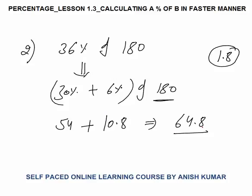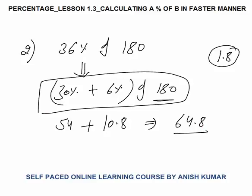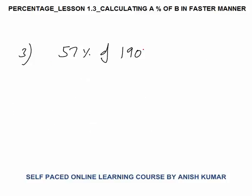In this way you have to calculate in aptitude exams. You don't need to write this working in the exam — I am just writing it in order to explain you. Your answer would go straight from the question to the result. Third question is 57 percent of 190. Try to solve it yourself, pause the video, then look at the way I have solved it.